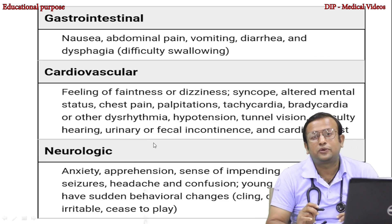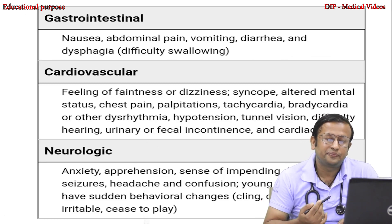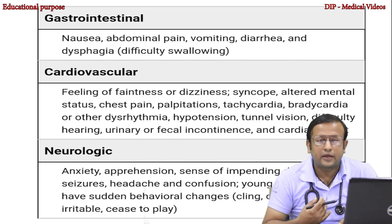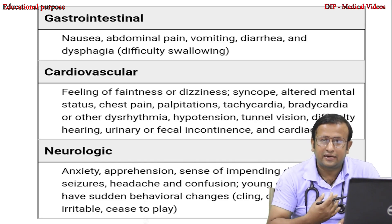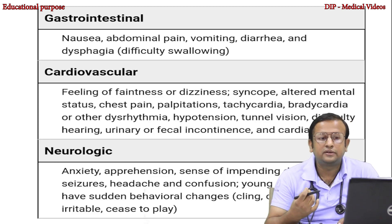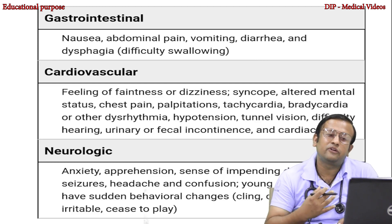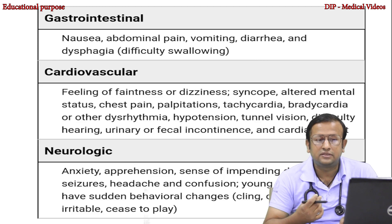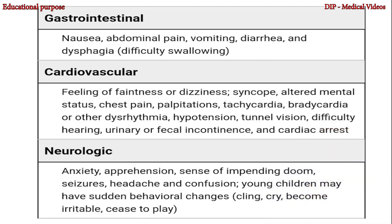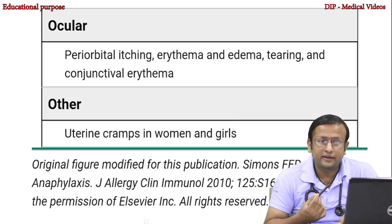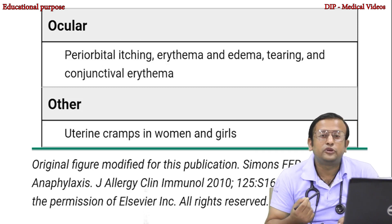Gastrointestinal and cardiovascular compromise also occur. GI symptoms include nausea, abdominal pain, vomiting, diarrhea, and dysphagia. Cardiovascular symptoms include feeling of faintness or dizziness, syncope, altered mental status, chest pain, palpitations, tachycardia, bradycardia or other dysarrhythmia, hypotension, tunnel vision, difficulty in hearing, urinary or fecal incontinence, and cardiac arrest. Neurological symptoms include anxiety, apprehension, sense of impending doom, seizure, headache, and confusion. Young children may have sudden behavioral changes. Ocular symptoms include periorbital itching, erythema and edema, tearing, and conjunctival erythema. In women and girls, uterine cramps may also occur.